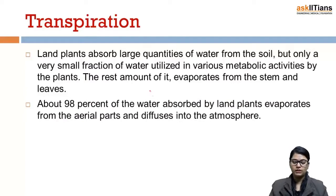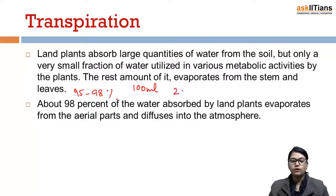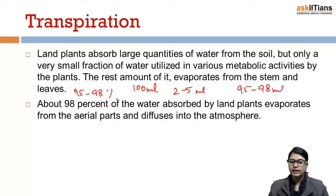About 95 to 98 percent of water absorbed by land plants evaporates into the atmosphere. So if 100 ml of water is being absorbed by a plant, then only 2 to 5 ml will be utilized and the rest 95 to 98 ml will evaporate into the atmosphere.